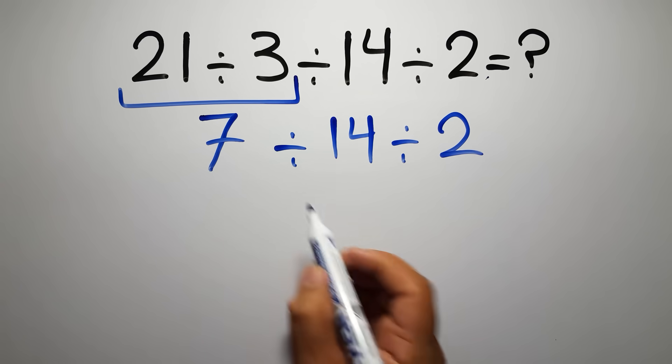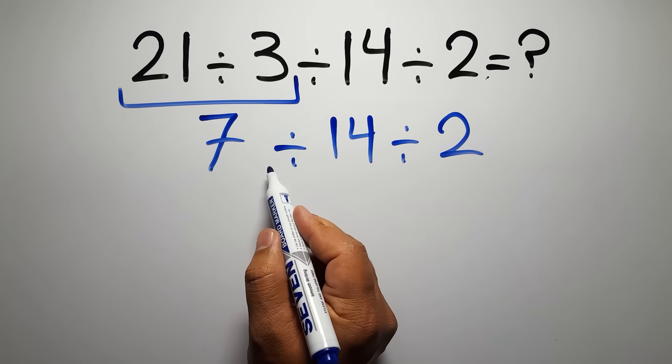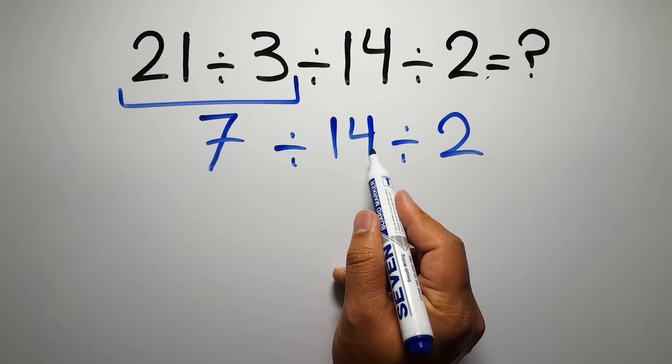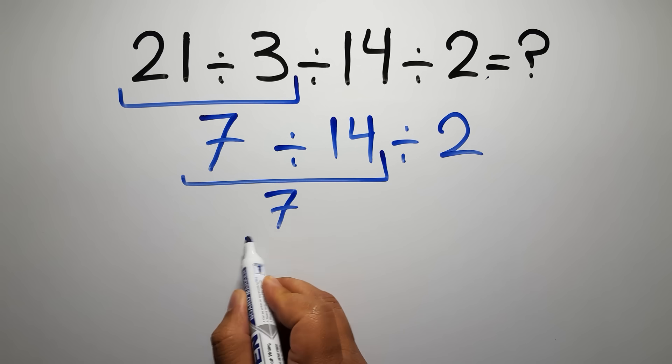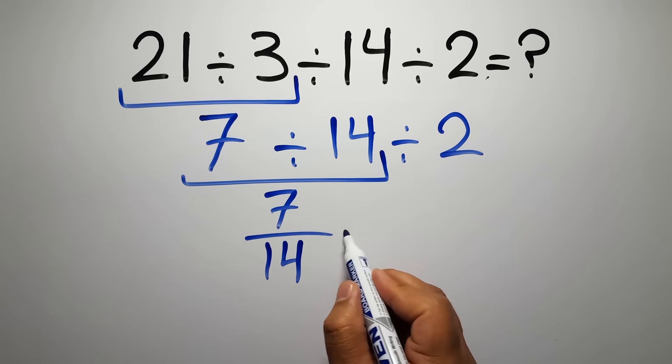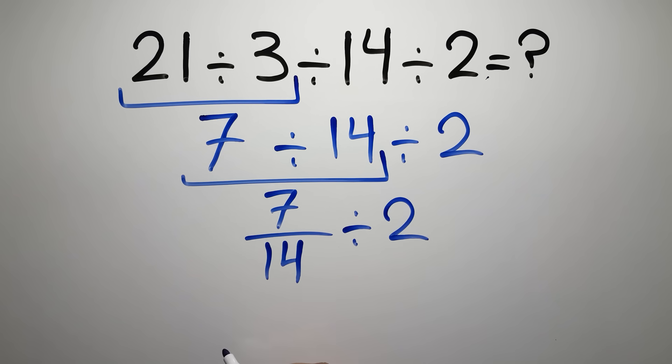Now we have to work from left to right, so first 7 divided by 14 can be written as 7 over 14, then divided by 2.